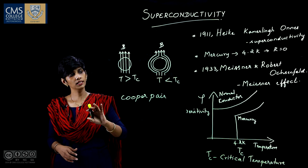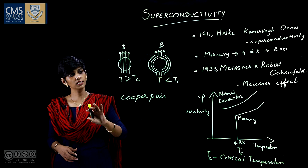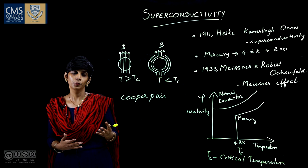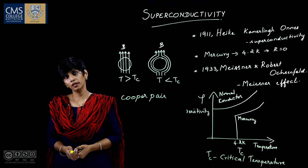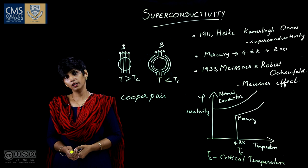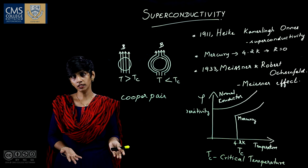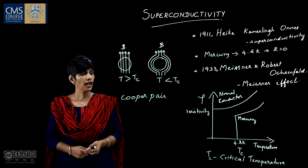When the voltage is removed, the current starts flowing indefinitely as the Cooper pairs do not have any opposition. In order to stop the current, these Cooper pairs should be halted at the same time. This can be done by increasing the temperature of the superconductor, which causes the Cooper pairs to separate into individual electrons and the material becomes normal.